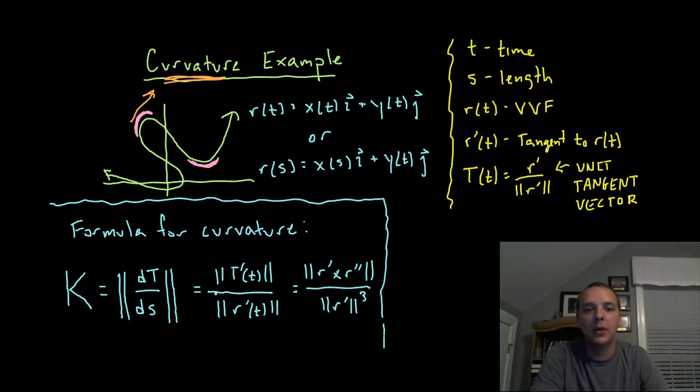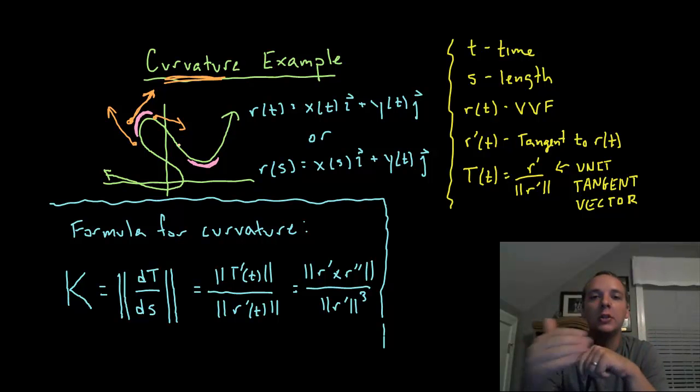We have a few different formulas for curvature. The curvature k could be expressed as the change in the unit tangent vector over a given length, and that's probably the most intuitive definition. Look at this very bent part of the line. If you have a unit tangent vector that changes wildly over a small span of space, we would say that there's a large amount of curvature.